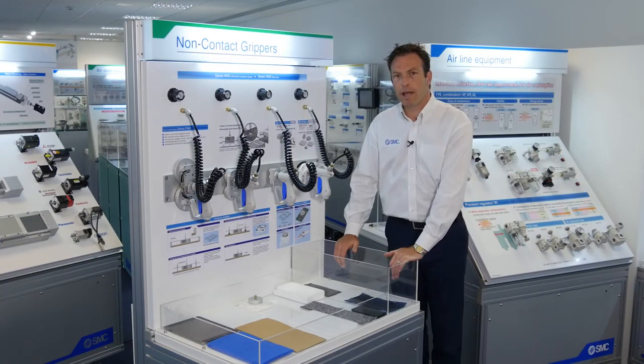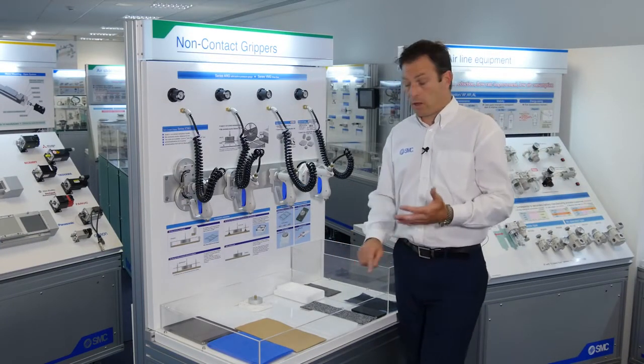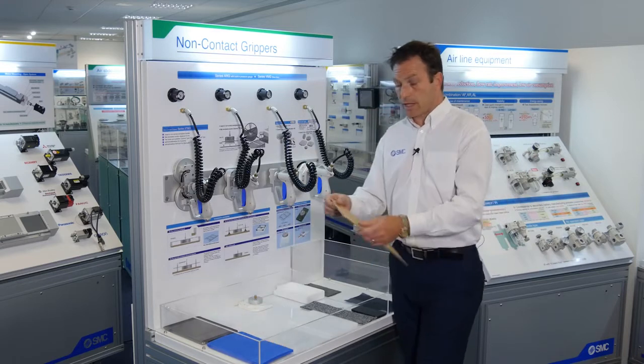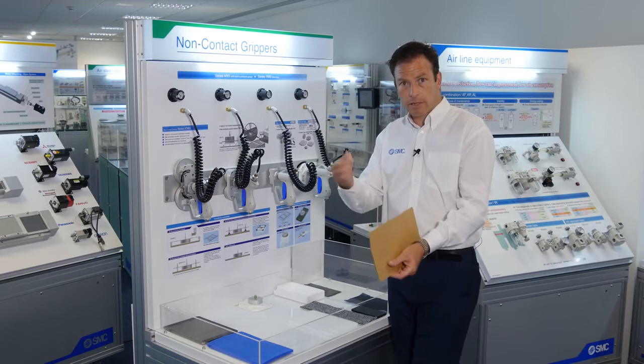So if you find yourself in a position where traditional vacuum won't work because the product you're picking up has either got holes in or such as paper or cardboard which is very fibrous and the fibers can block up the vacuum generators and block up the filters,